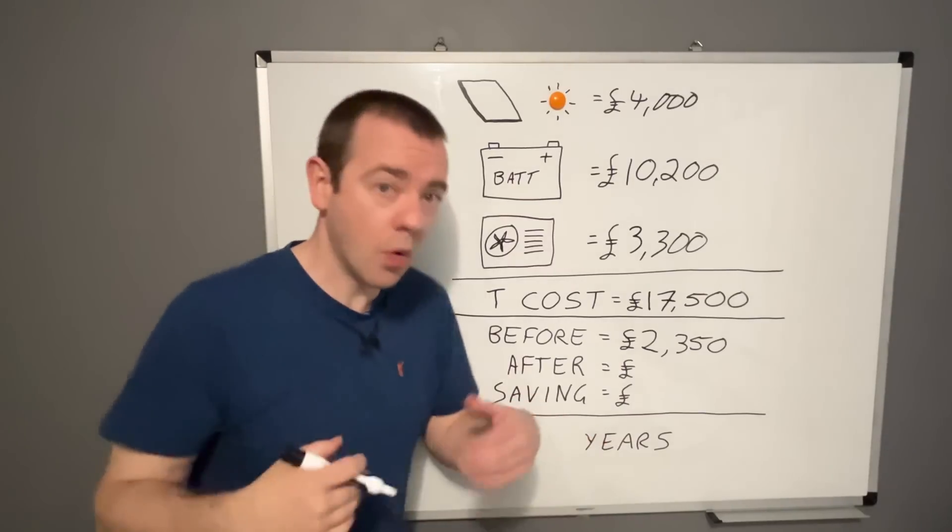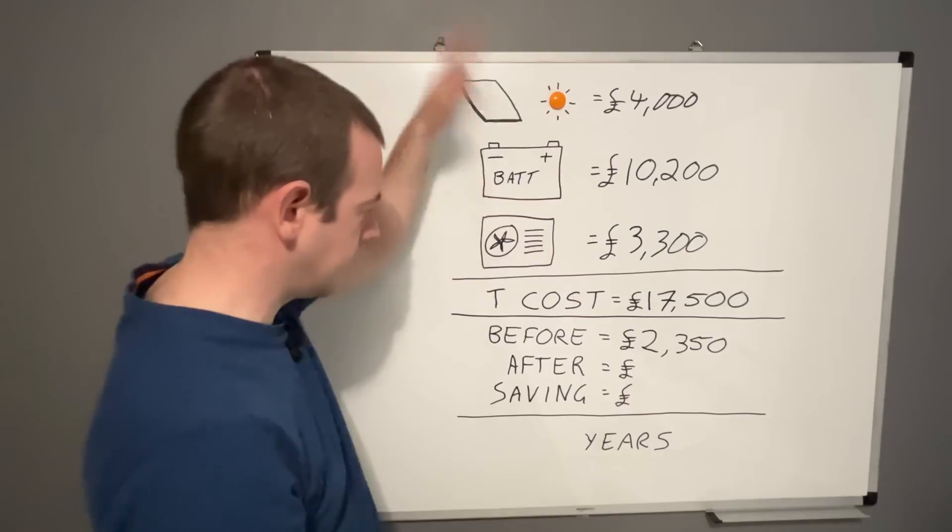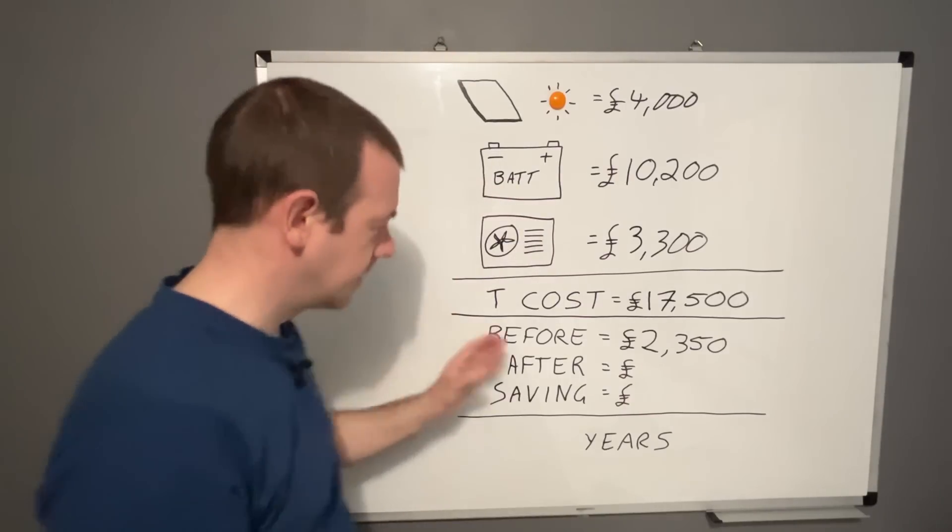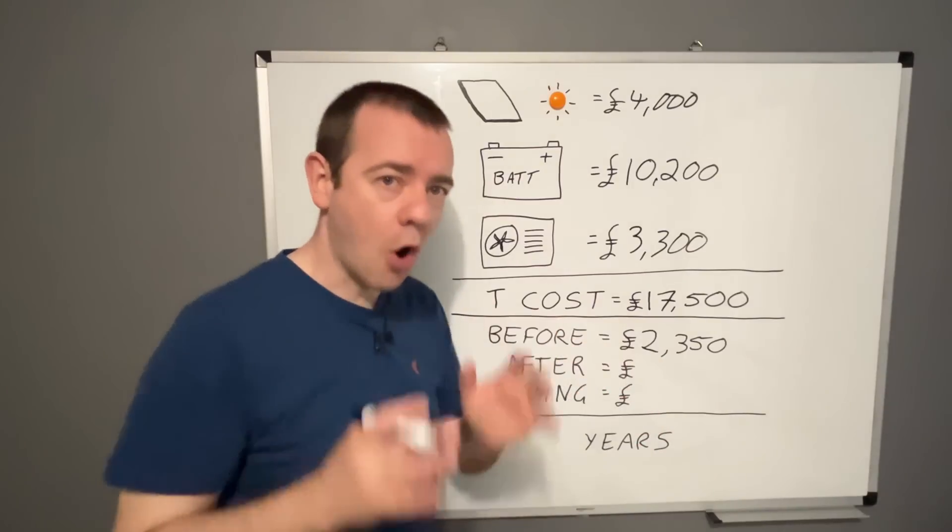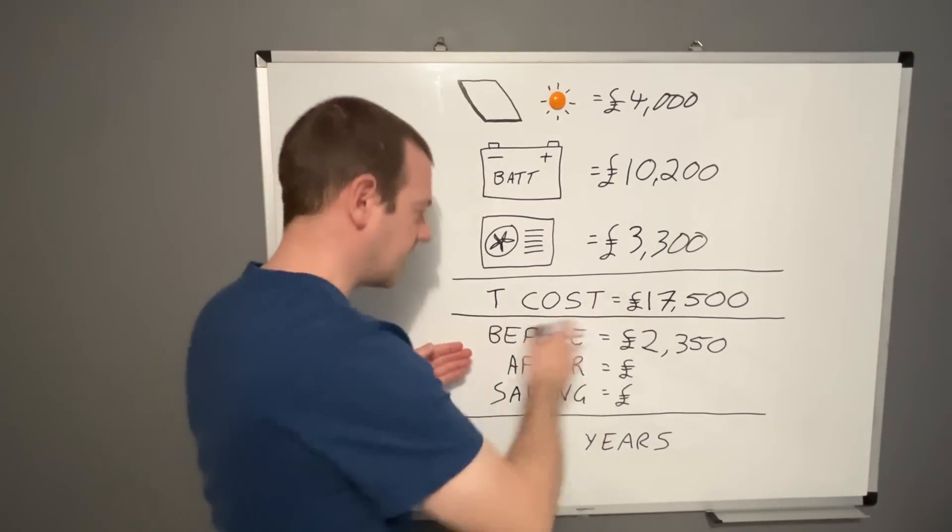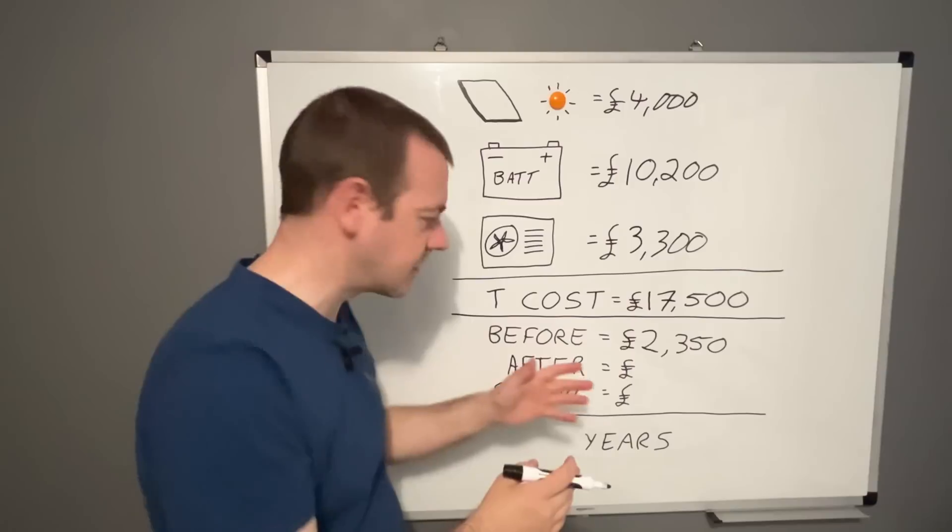£2,350. So that's based on, again, what it would have cost us had this all not have happened. Remember, five bed house always occupied, gas and electric for a year's worth of all that.